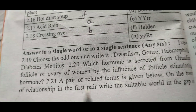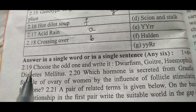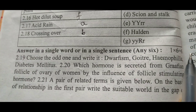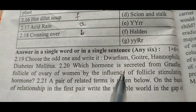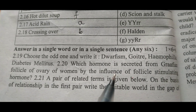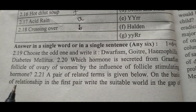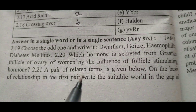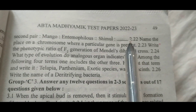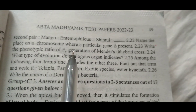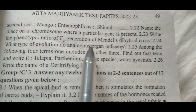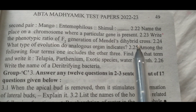Next, answer in a single word or in a single sentence. 2.19: Choose the odd one and write it — right answer Haemophilia. 2.20: Which hormone is secreted from Graafian follicle of ovary of women by the influence of follicle stimulating hormone? Right answer — Estrogen. 2.21: Mango — entomophilous and Simul — anemophilous. 2.22: Right answer — Locus. 2.23: Write the phenotype ratio of F2 generation of Mendel's dihybrid cross — right answer 9 is to 3 is to 3 is to 1.